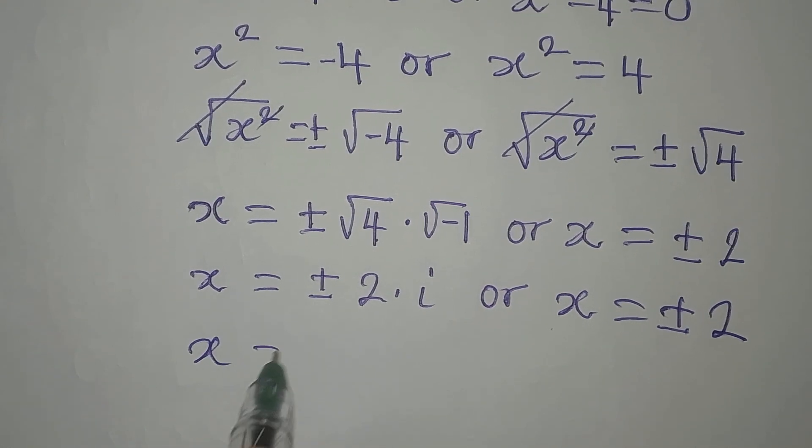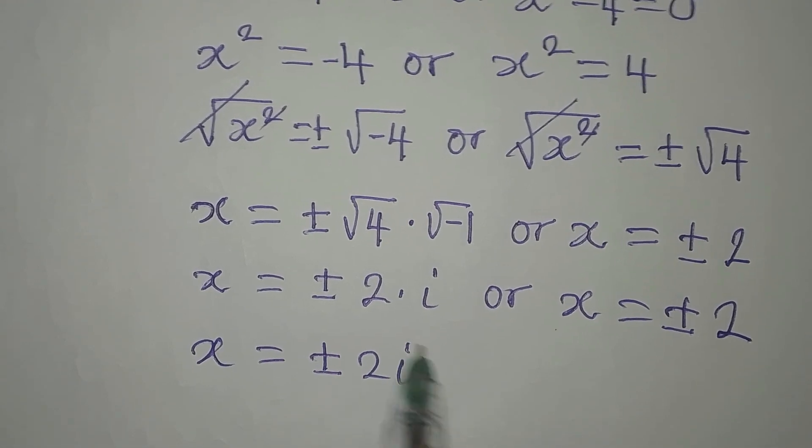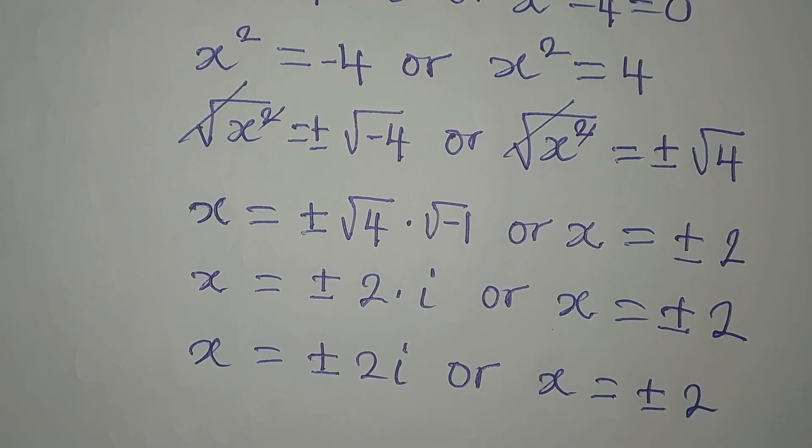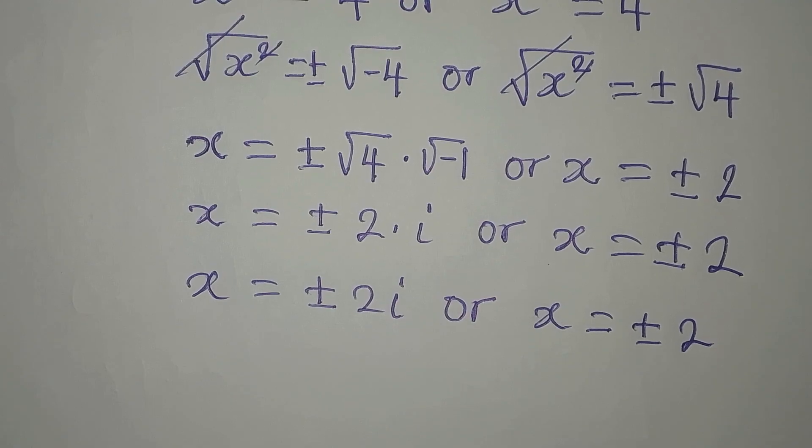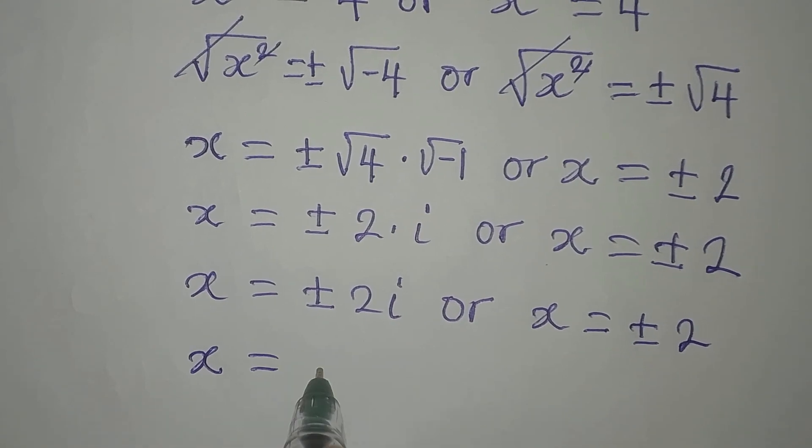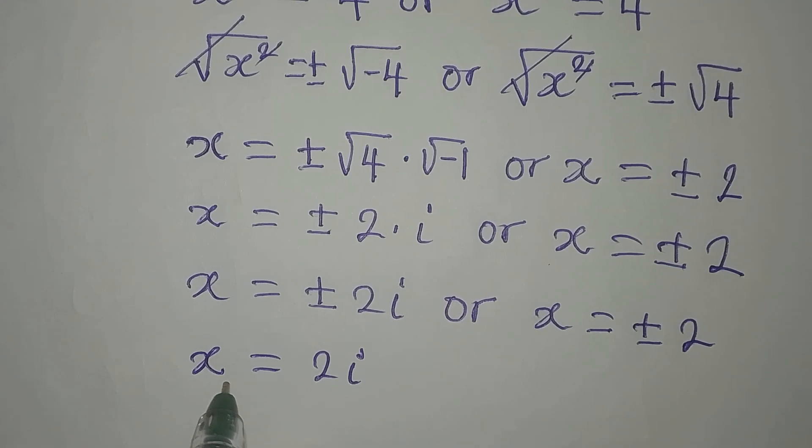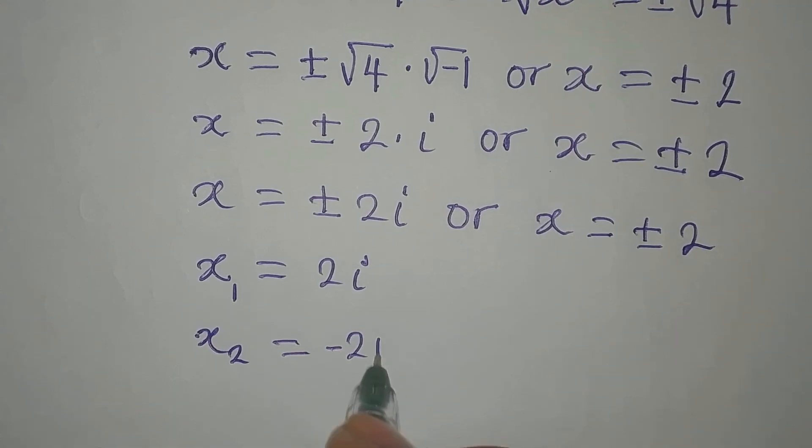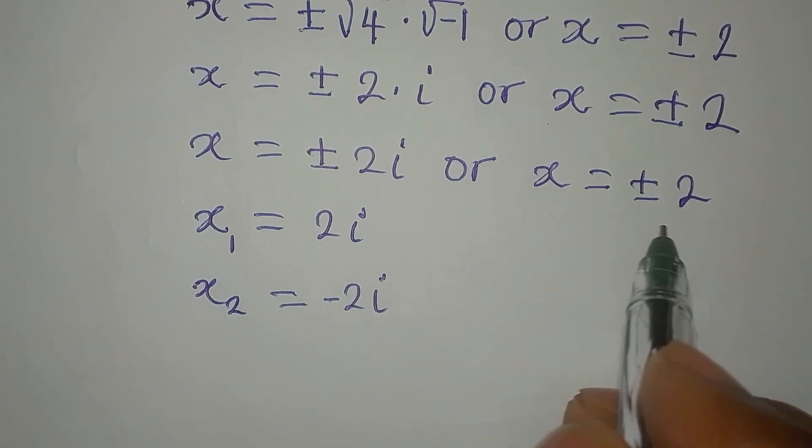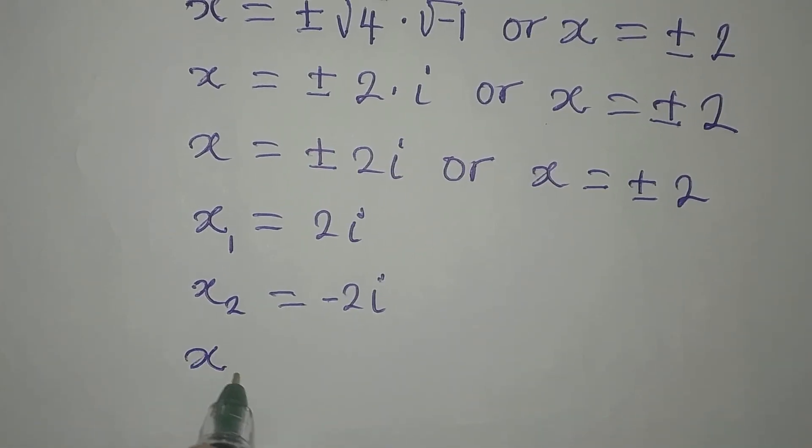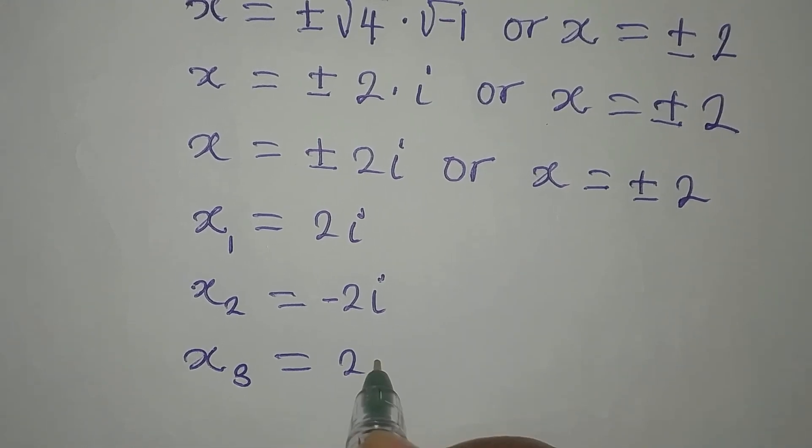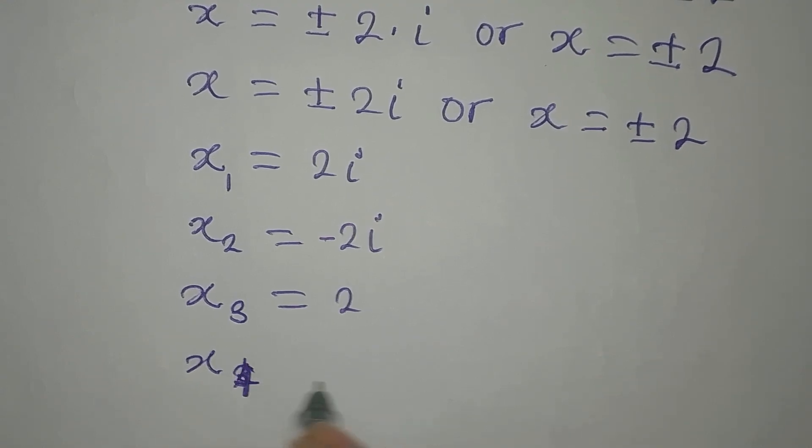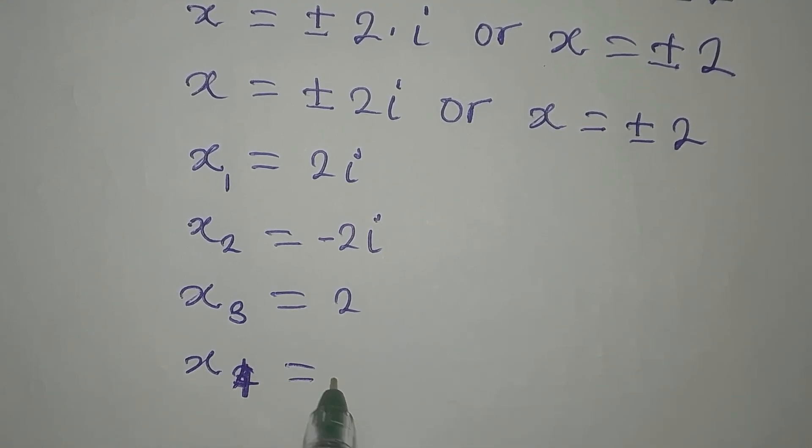Now let's bring the four solutions together. We have x to be equal to 2i, that's x1. x2 to be equal to negative 2i. Then from here I have x3 and x4. x3 to be equal to 2, yes ordinary 2. Then x4 to be equal to negative 2.